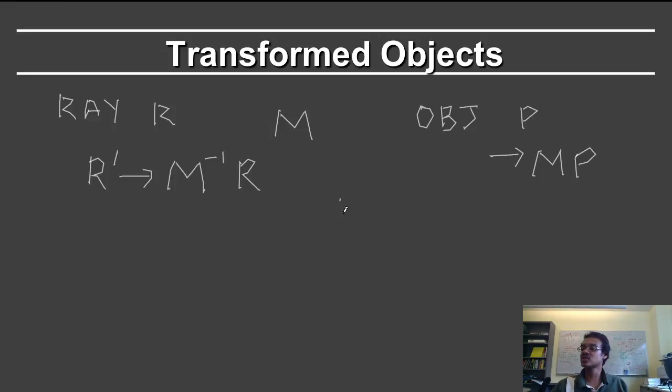Once I have this, I am really computing the intersection between R' and the original object P. After I've done this and computed this intersection point, let's call it P star. So let's call it P' star actually. I then apply the matrix M on this point. So I apply the matrix M on the intersection point. And that gives me my intersection point in the actual world.